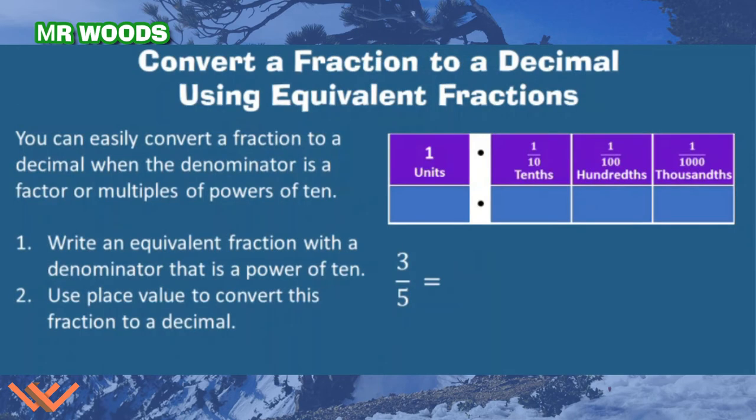Now I want to convert a fraction to a decimal using equivalent fractions. If you recall in a previous video, I did just that. It says you can easily convert a fraction to a decimal when the denominator is a factor or multiples of a power of ten. Number one, write an equivalent fraction with a denominator that is a power of ten. And then I can use that place value to convert this fraction to a decimal.